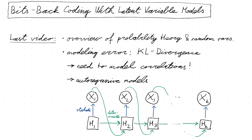In the last video I gave an overview of topics from probability theory, introducing random variables, and we used these concepts to quantify what we call the modeling error — that is, how many bits do you lose in expectation if your model doesn't completely capture all the properties of the data source. The quantity defined for this modeling error is called in the literature the KL divergence. From these observations we saw that our models need to be able to capture correlations between different parts of your message — for example between pixels in an image or between words in a document.